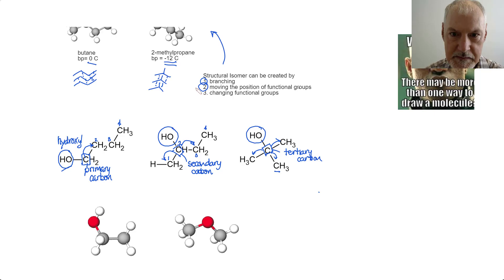So, that's moving the position of the functional groups, and we've covered branching. Let's look at another way of creating an isomer, by changing the functional group, or class, of chemical.